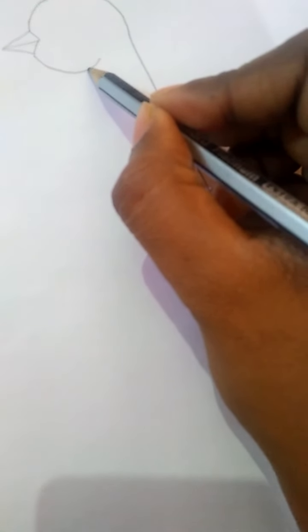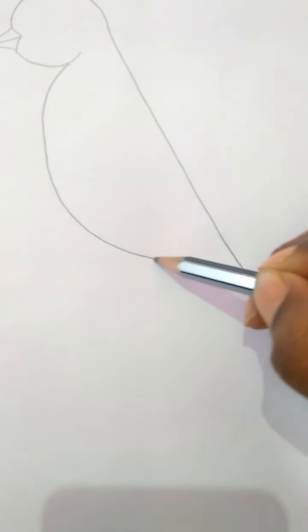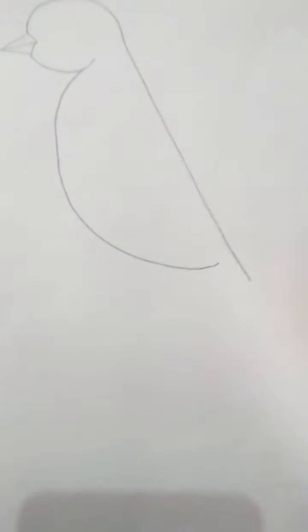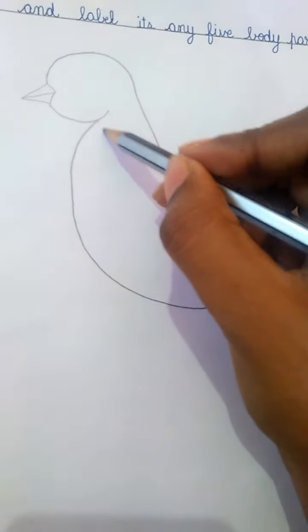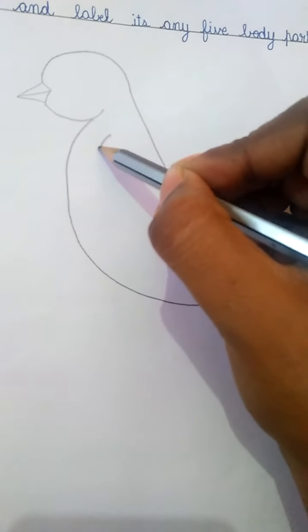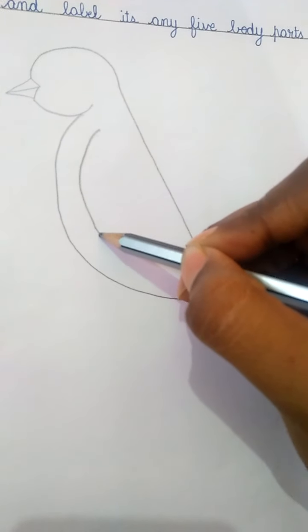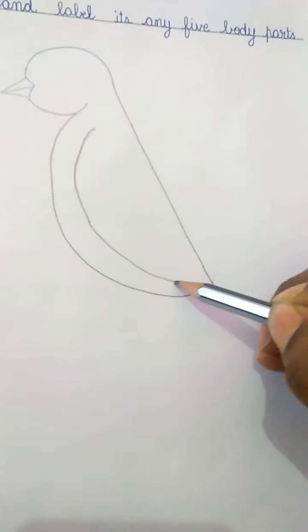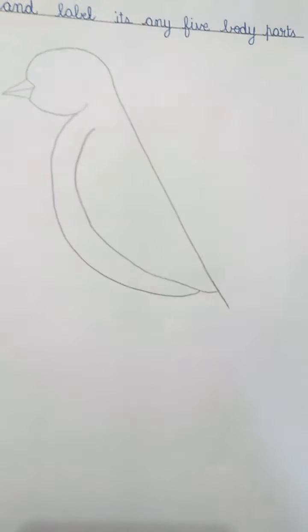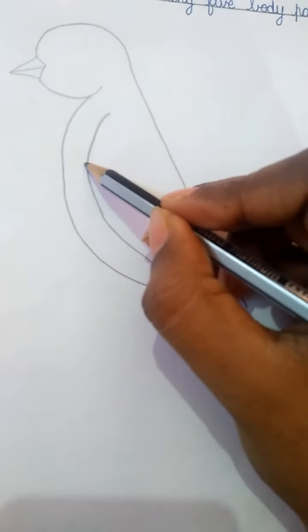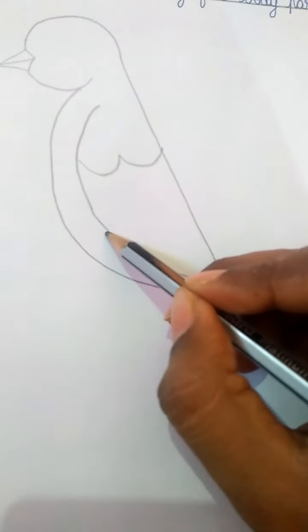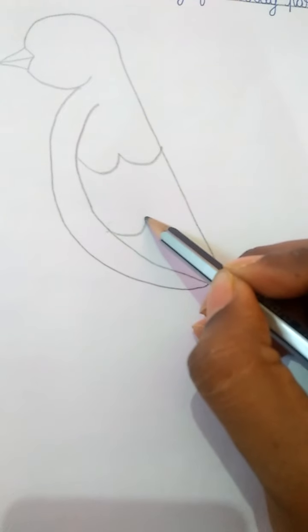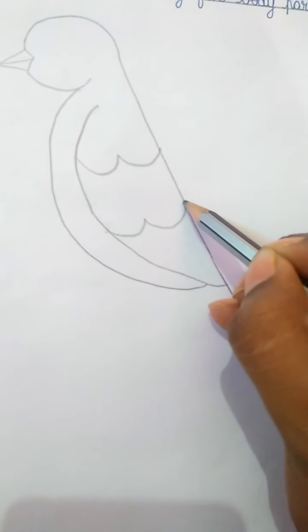Now let's draw the belly from here. Now let's show the wings. Leave some space from here, draw a curved line, go down and join it here.